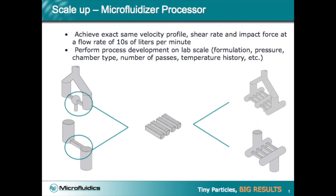This next slide shows why microfluidics guarantees scale up, and how the microfluidizer can easily achieve this by placing more of the same microchannel in parallel. By doing this, the microfluidizer can achieve the exact same velocity profile, shear rate, and impact force at flow rates of tens of liters per minute. Because the microchannels have a fixed geometry, all of the process development can be performed at the lab scale, and the final formulation can be easily transferred to a production scale.